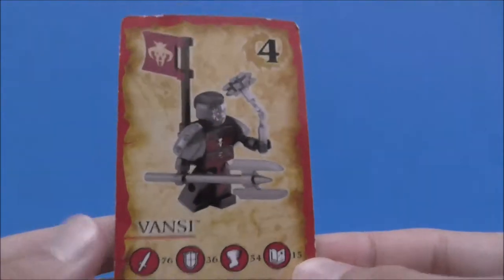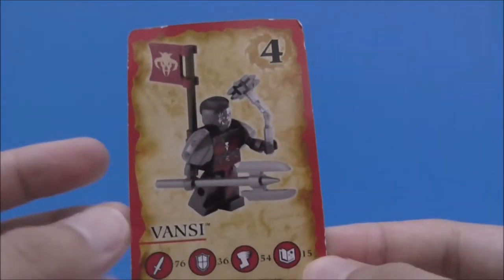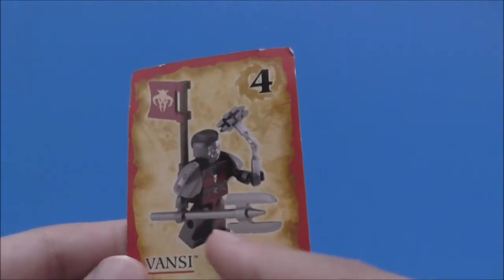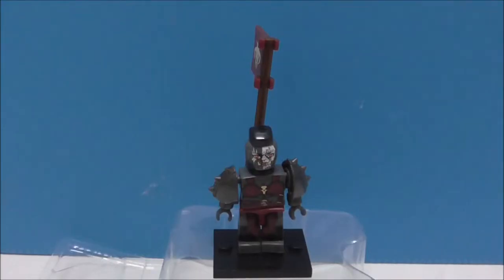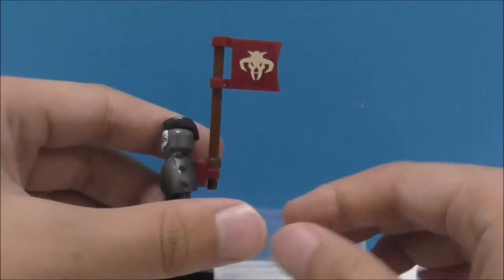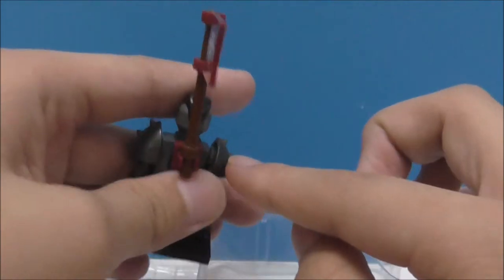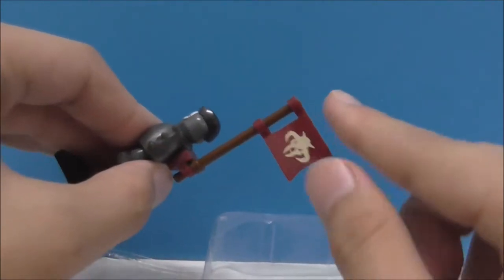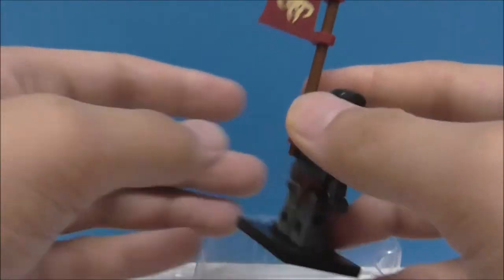This set also comes with a card, which is Vansy's card. This is the figure itself here. She has this orc flag on her back, which is a printed piece. It's just a normal attachment piece, pretty similar to Lego's.